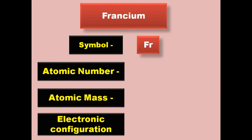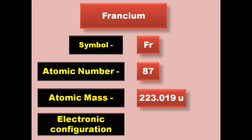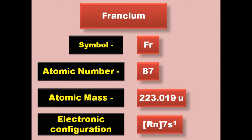Francium has symbol Fr, atomic number 87, atomic mass 223.019, electronic configuration [Rn] 7s1. Francium is an alkaline metal and exists in solid form at room temperature.